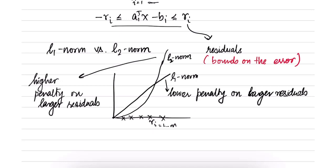What does this imply? When you have a lower penalty on larger residuals, it means you allow or are okay with having large residuals. With L2 norm, you are not okay with having large residuals and you absolutely want to minimize very large residuals. If there are some points with very large error, when you do L1 norm minimization the fit will tolerate and sort of ignore the large error, but it will not be ignored in the L2 norm case.